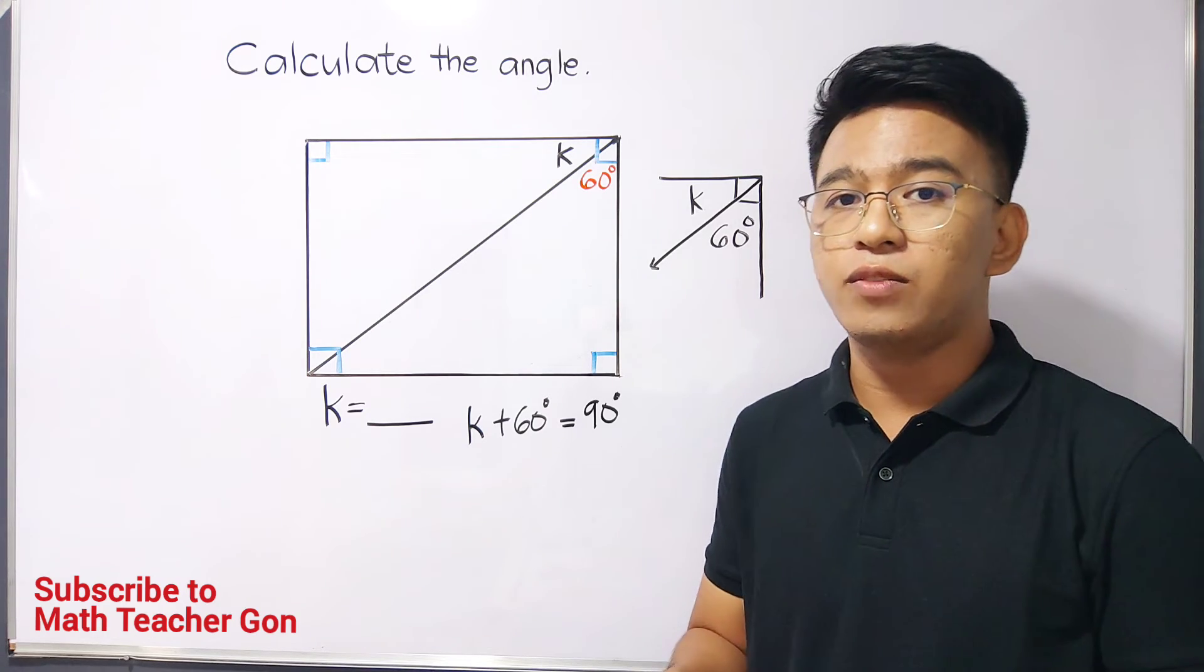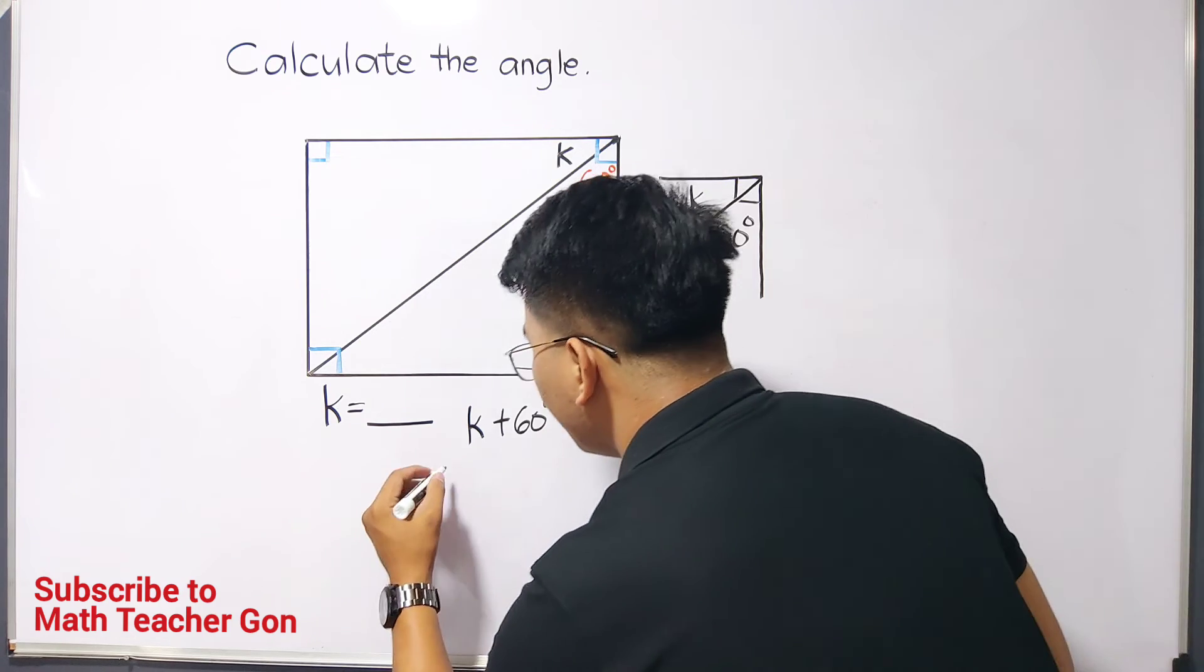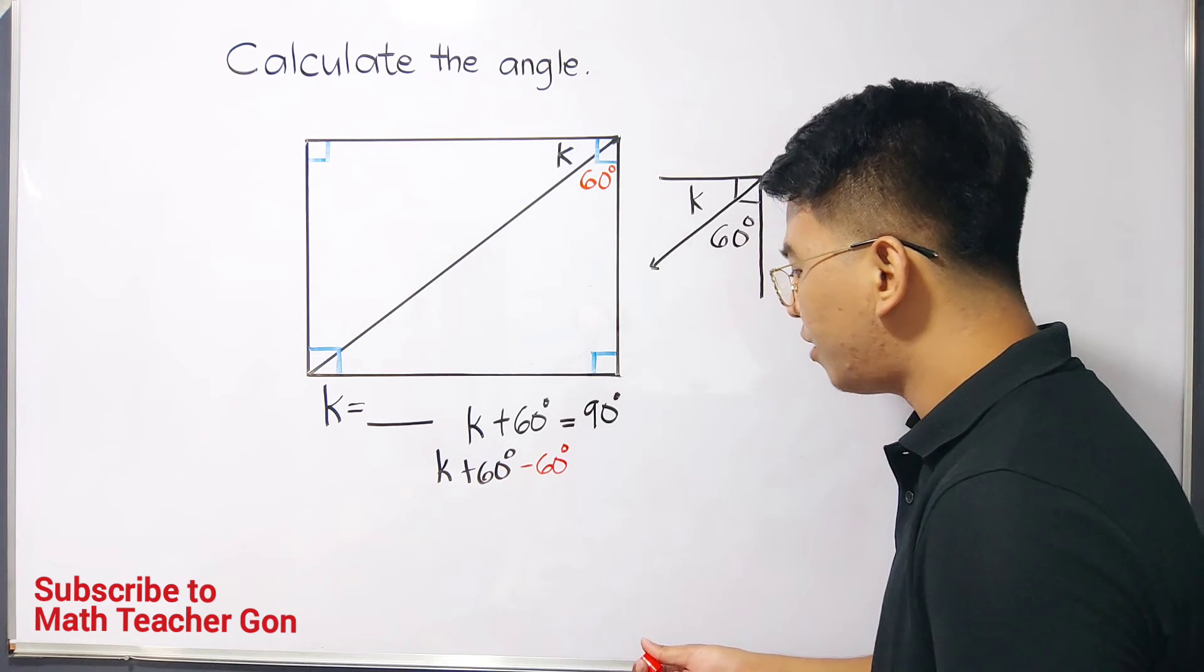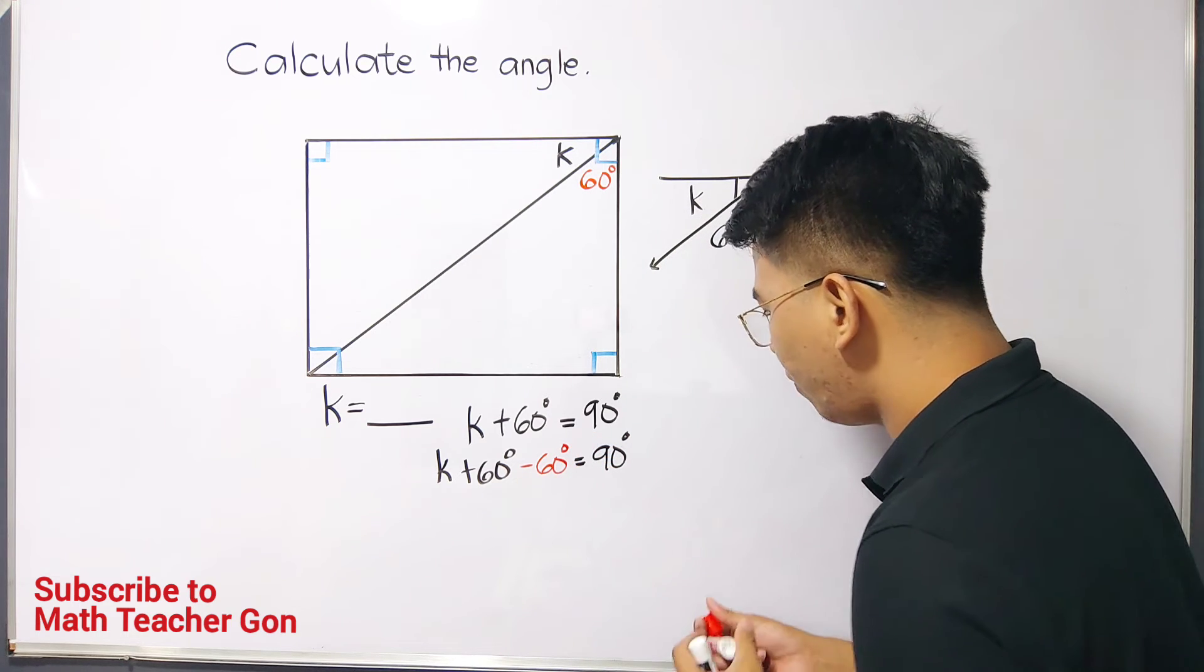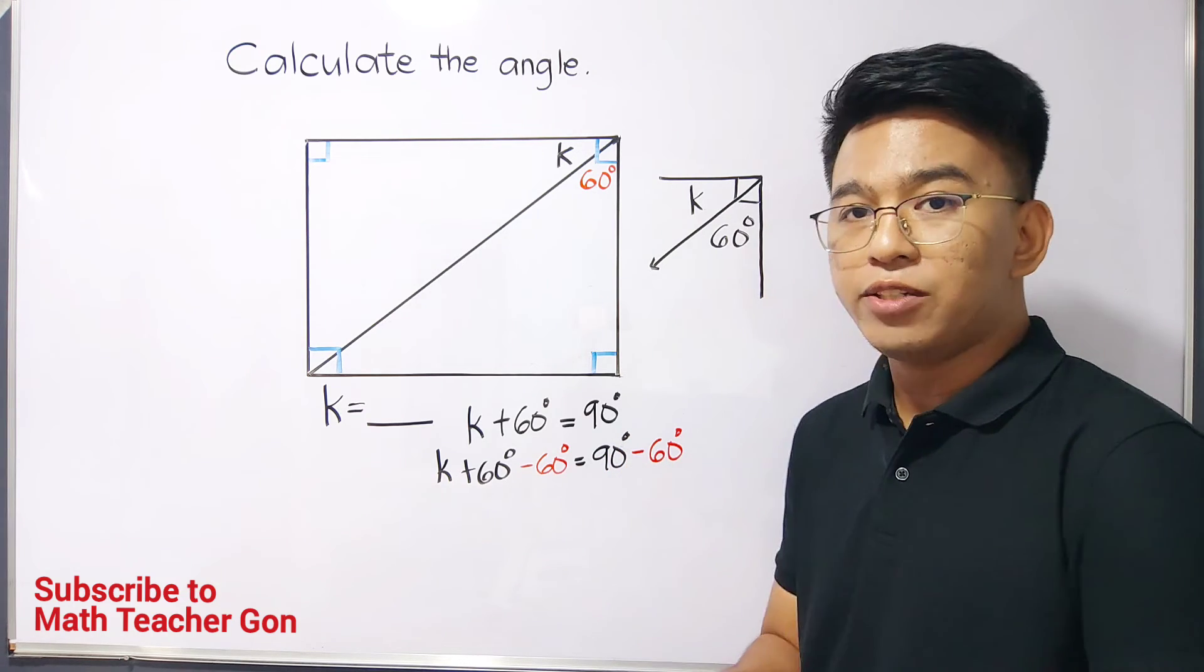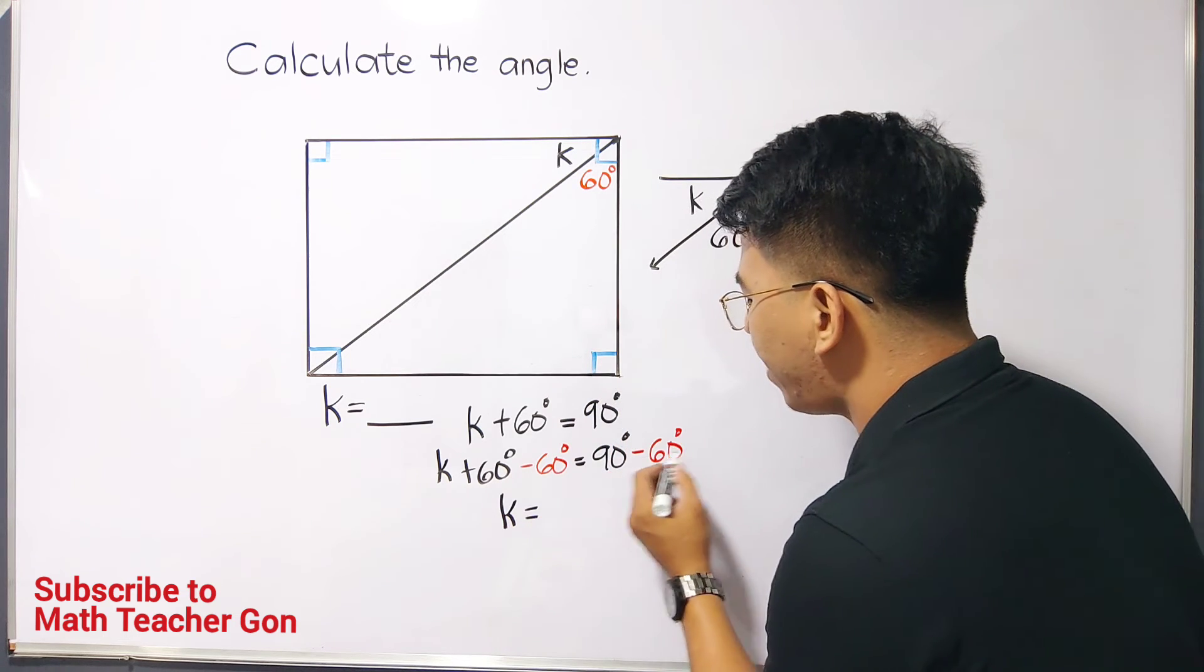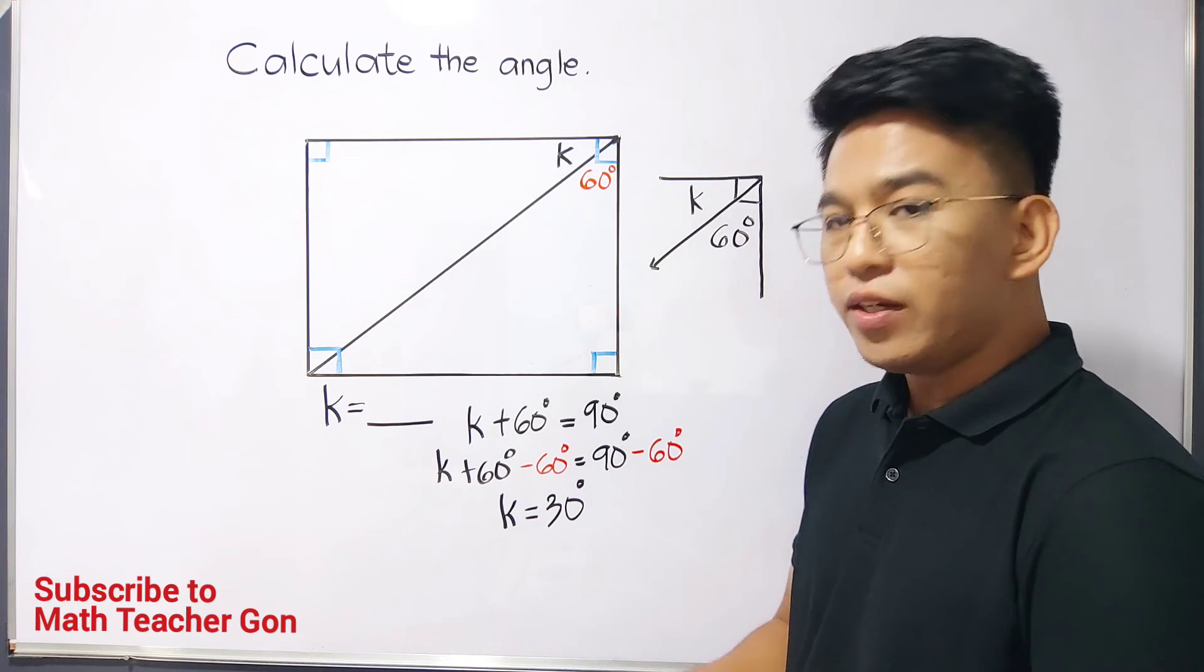Now, how are we going to calculate this one? Simple lang lang man. We need to eliminate 60 degrees by subtracting both sides by 60. So we have here k plus 60 degrees minus 60 degrees and for the other side of the equation we have here is equal to 90 and then we have here minus 60 degrees and simplifying this part of the equation this 60 minus 60 is 0 so we have here k is equal to 90 minus 60 degrees and that would be 30 degrees.